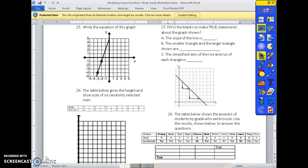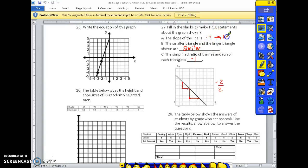Let's look at the next problem. Fill in the blanks to make true statements about the graph shown. The slope of the line is negative. So, we're going down 2 to the right 2. So, that is negative 1. The smaller triangle and the larger triangles shown are similar. And the simplified ratio of the rise to the run of the triangle is negative 1.